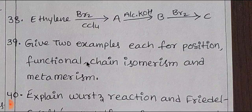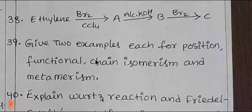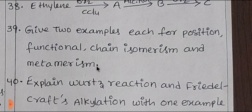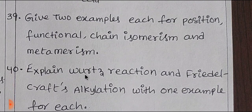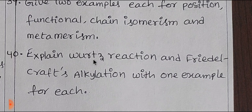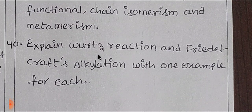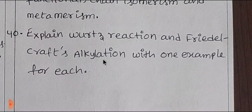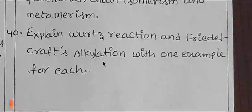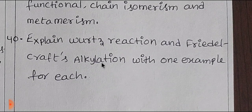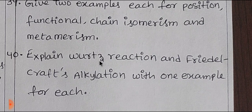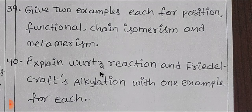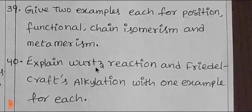For the exam, you need to cover two positions: functional isomerism and chain isomerism — you have three marks for these. Next, explain Wurtz reaction and Friedel-Crafts alkylation with one example for each. This covers benzene reactions and related aromatic substitution reactions, requiring 20 reactions total.